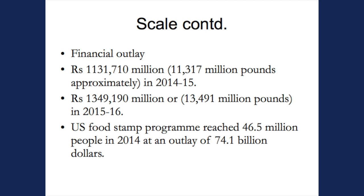Financial outlay is a very important point for me as an economist. The financial outlay is roughly 11,000 to 13,000 million pounds — using the old conversion of 100 rupees to a pound. The U.S. food stamp program was $74 billion in 2014. You all know what CAP subsidies to the UK are, so these numbers are not very large.